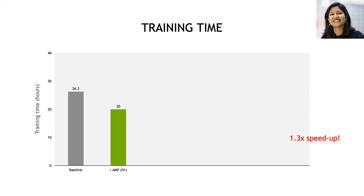How did that affect our training time? With our baseline configuration, we were training in 26.3 hours, but by adding AMP we went down to 20 hours, which is about a 1.3x speedup.